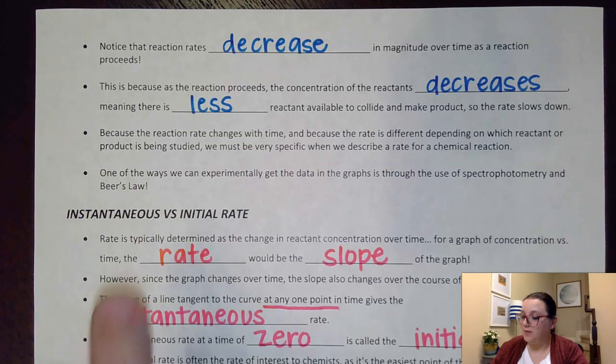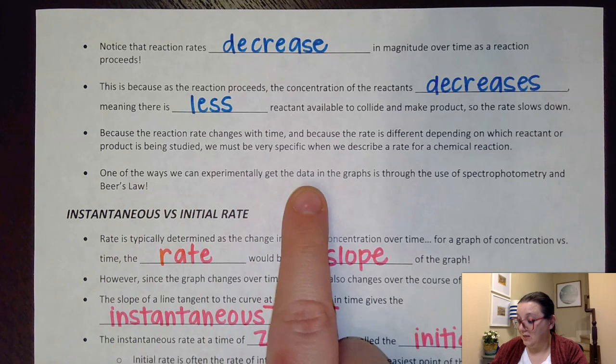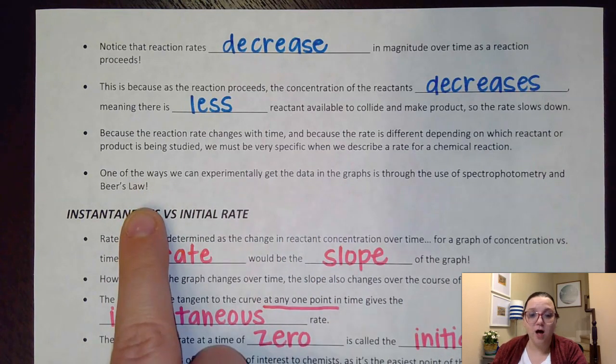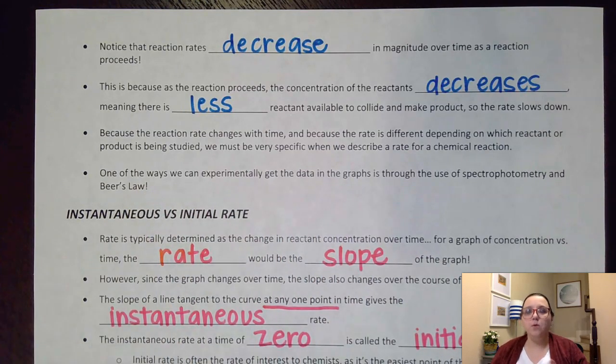Now, it says here that one of the ways we can experimentally get the data on the graphs is actually through Beer's Law. If you remember back with Beer's Law, what we were doing is we could use absorbance levels to measure molarity. Well, if you measure how absorbance changes over time, you could measure how molarity changes over time. And so therefore, you could get the information you needed from one of these rate law graphs. So Beer's Law is one of the experimental ways we can get our data.